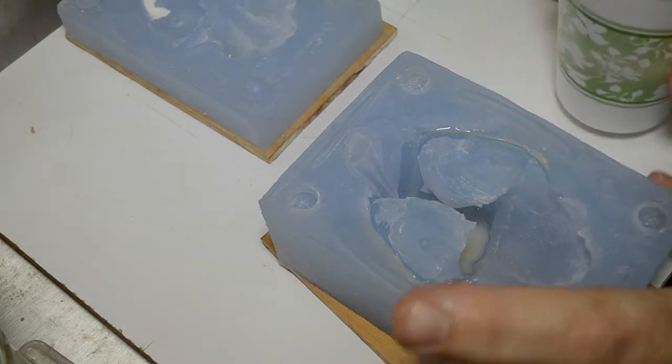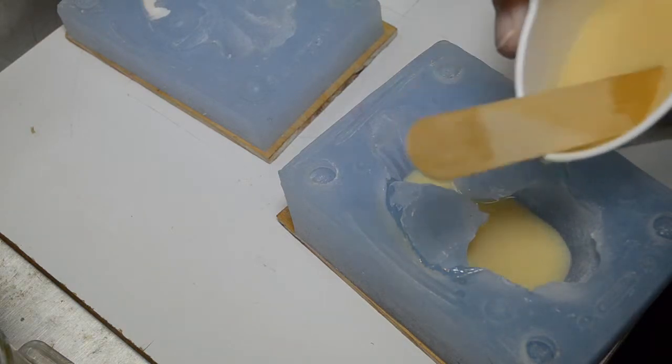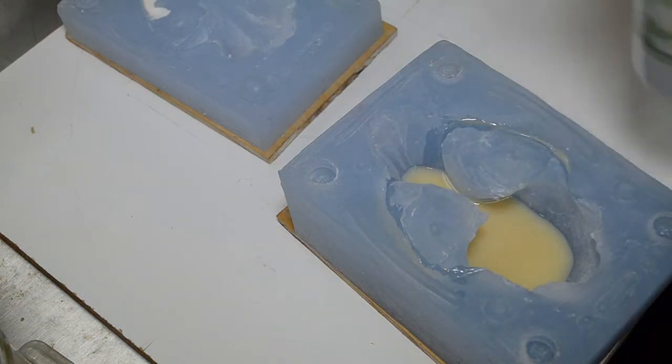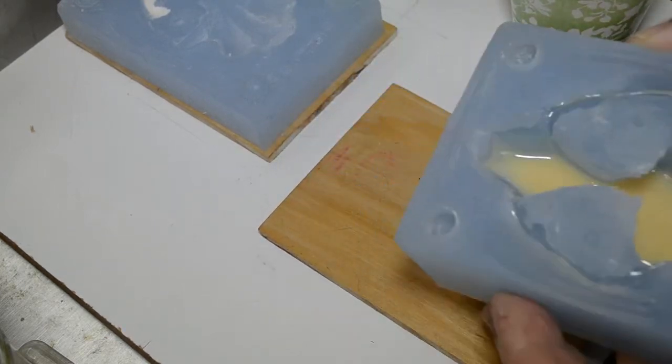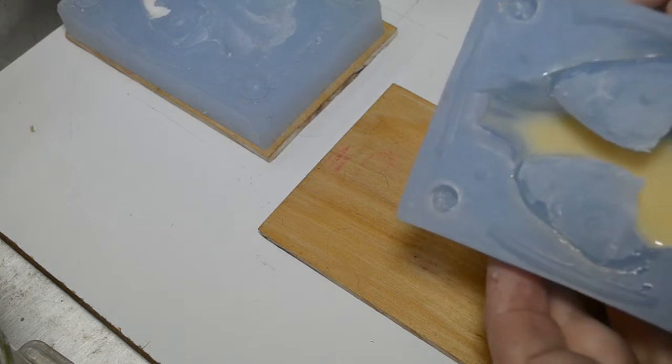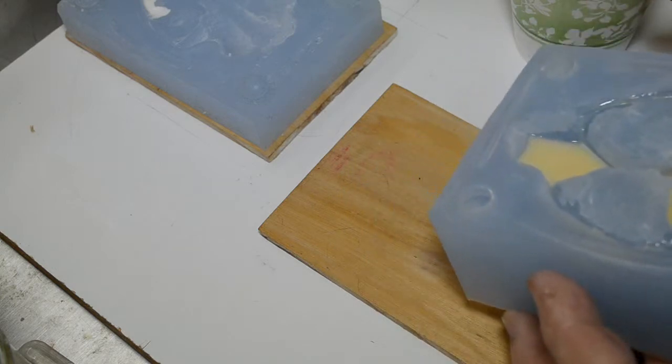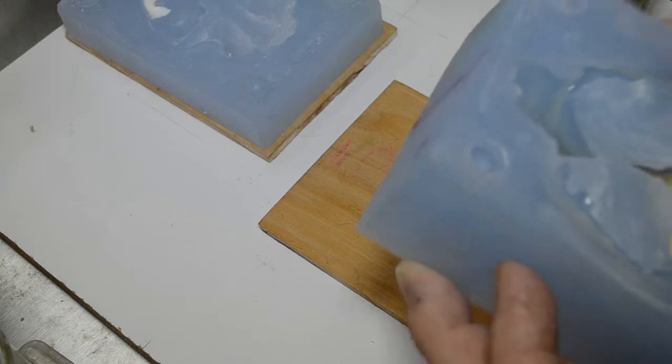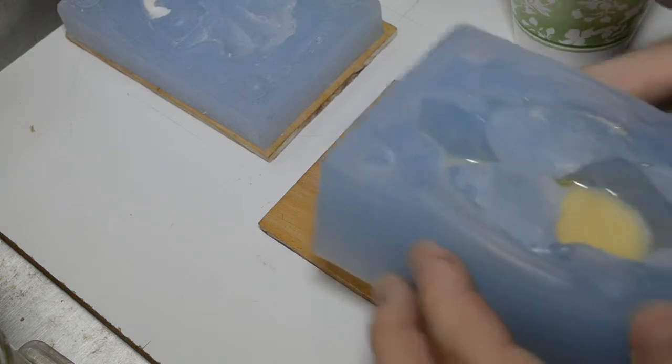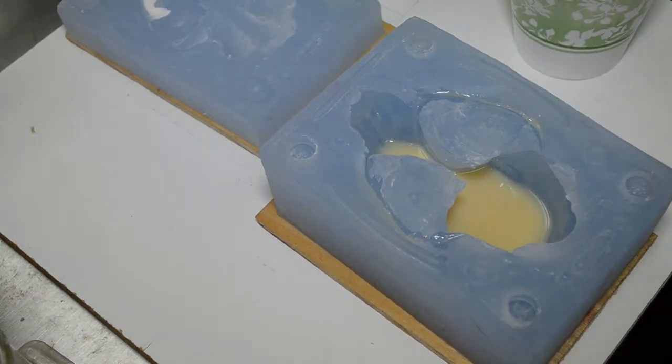Now I'm going to take some of the resin and I'm going to pour it into the skull mold, and I'm going to move it around. I want to coat as many of the surfaces as I possibly can by hand before assembling the mold halves together. You want to be careful you don't want to spill it all over the place. This is just to simply have the resin make contact in some of the important details.